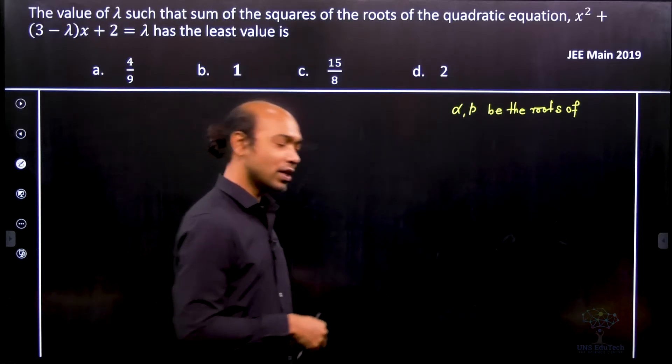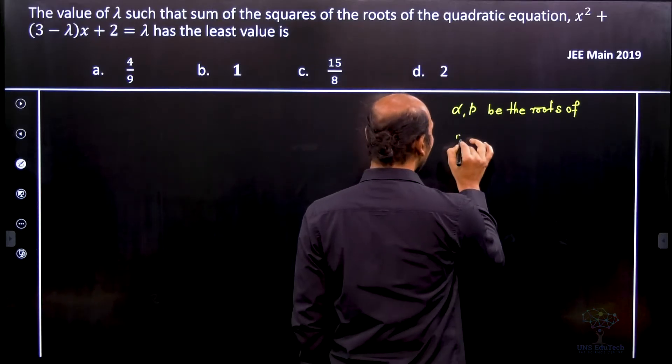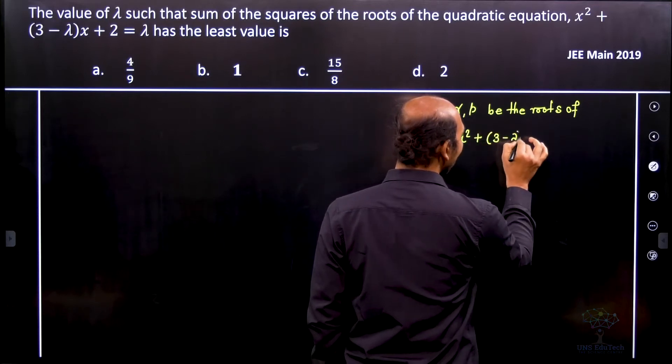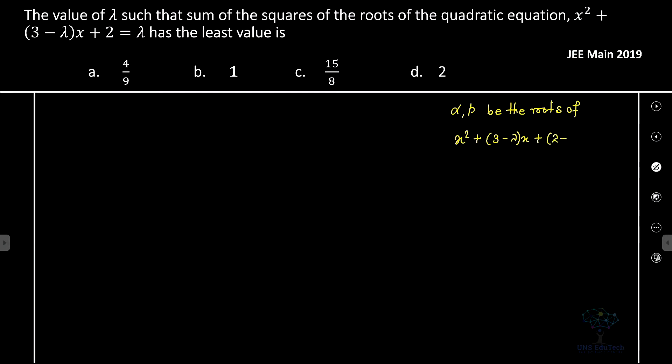Now see that this given quadratic equation is not in the form of ax squared plus bx plus c. So let's write it down in that form. So therefore it's 2 minus lambda.